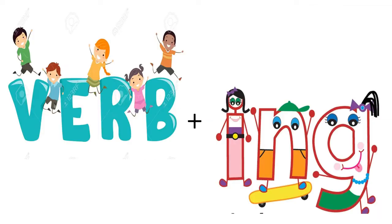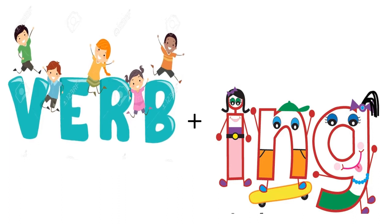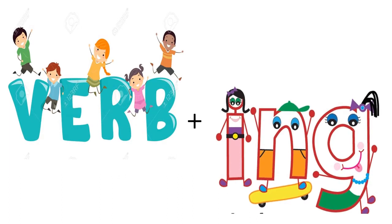For making the present participle form of the verb, we need the first form of the verb and add -ing. For example: write becomes writing, sleep becomes sleeping, walk becomes walking. By adding -ing to the first form of the verb, we can make the present participle form.